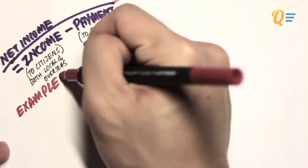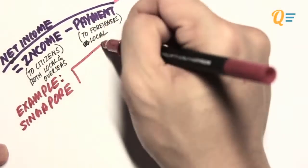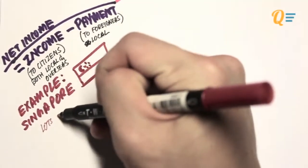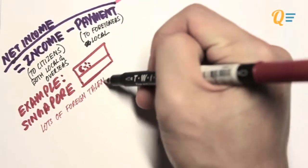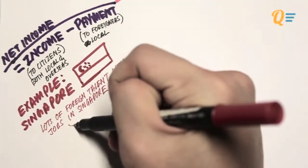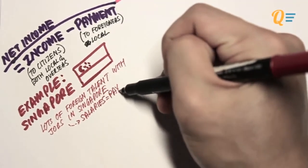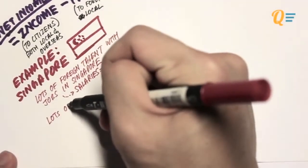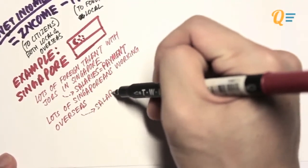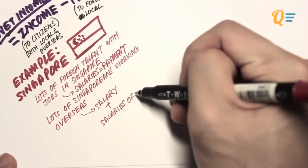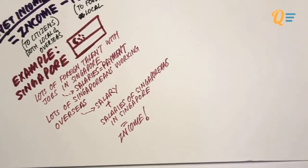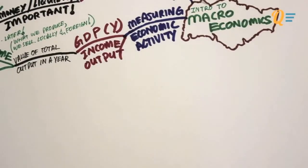Using Singapore as an example: this is a country where there are a lot of foreign talents coming in to work, and their salaries are known as payments to foreigners. At the same time, many Singaporeans go overseas to find jobs, and the incomes they earn are known as income to citizens of Singapore. Even though they are overseas, it still counts towards income for a Singaporean, and is therefore included in the value of the GNP.